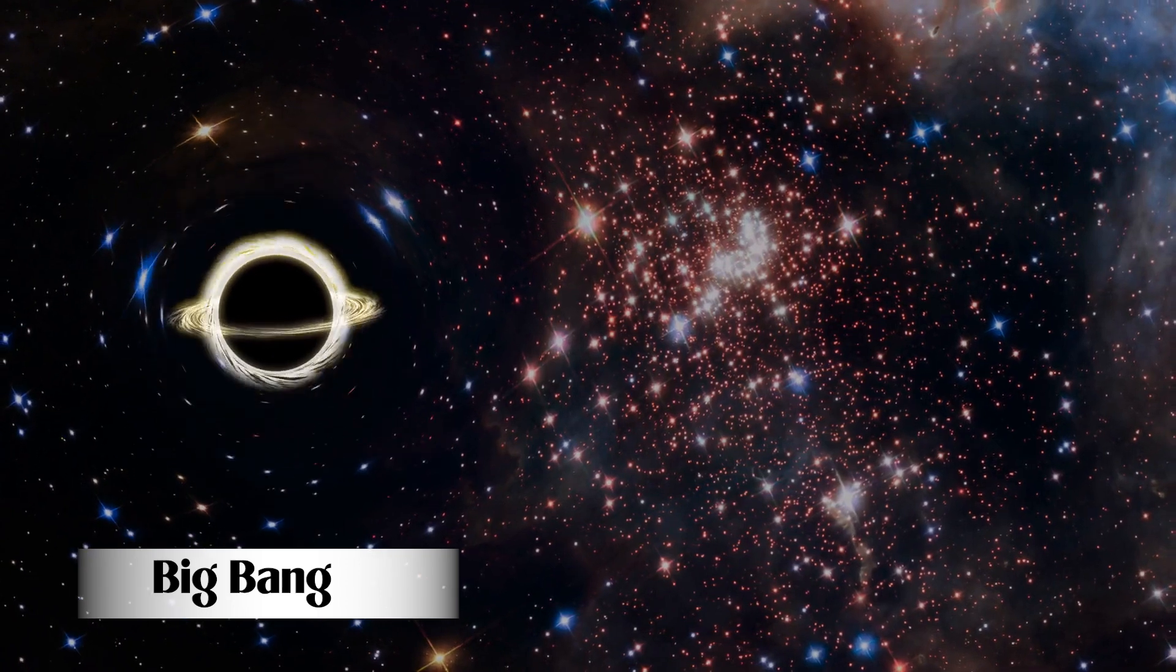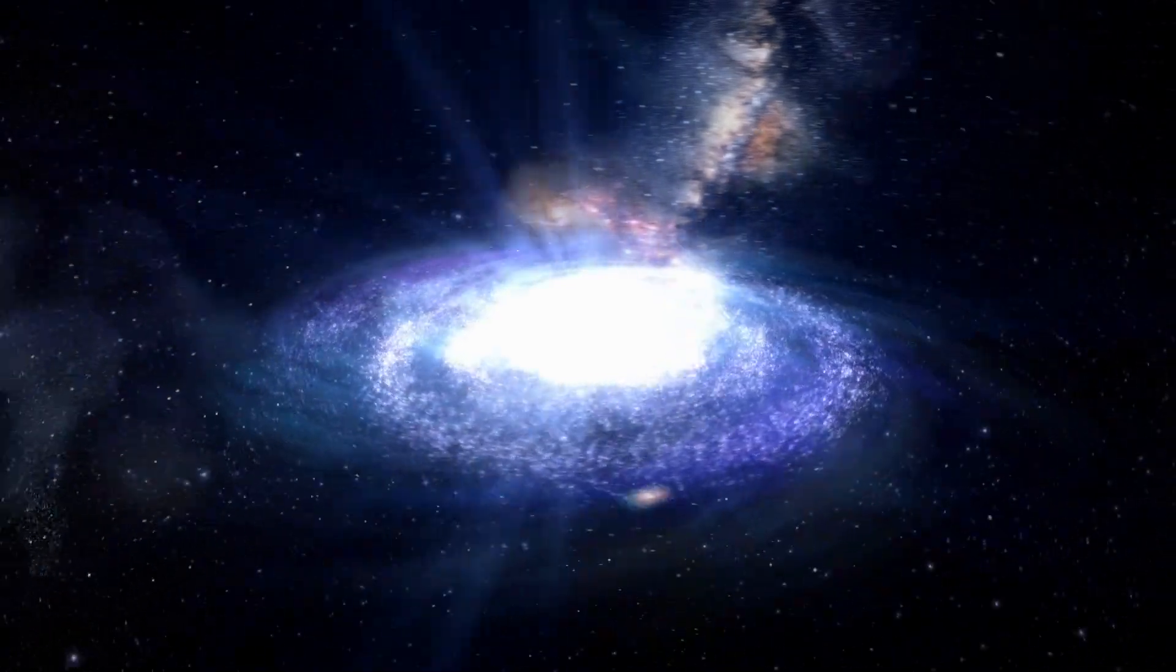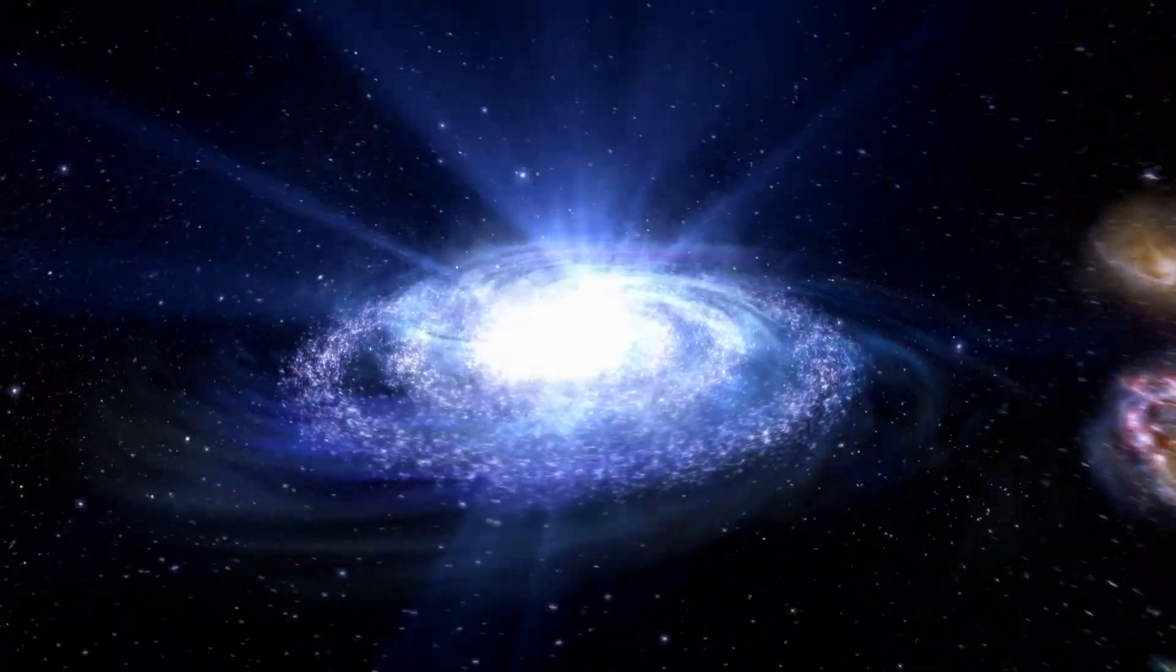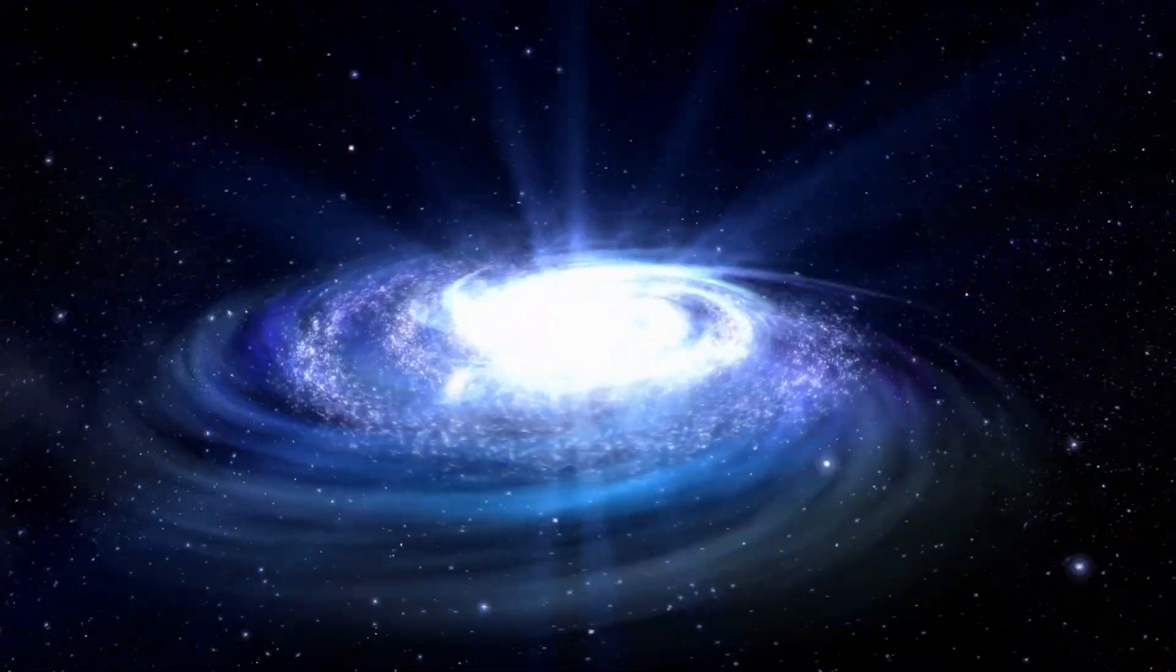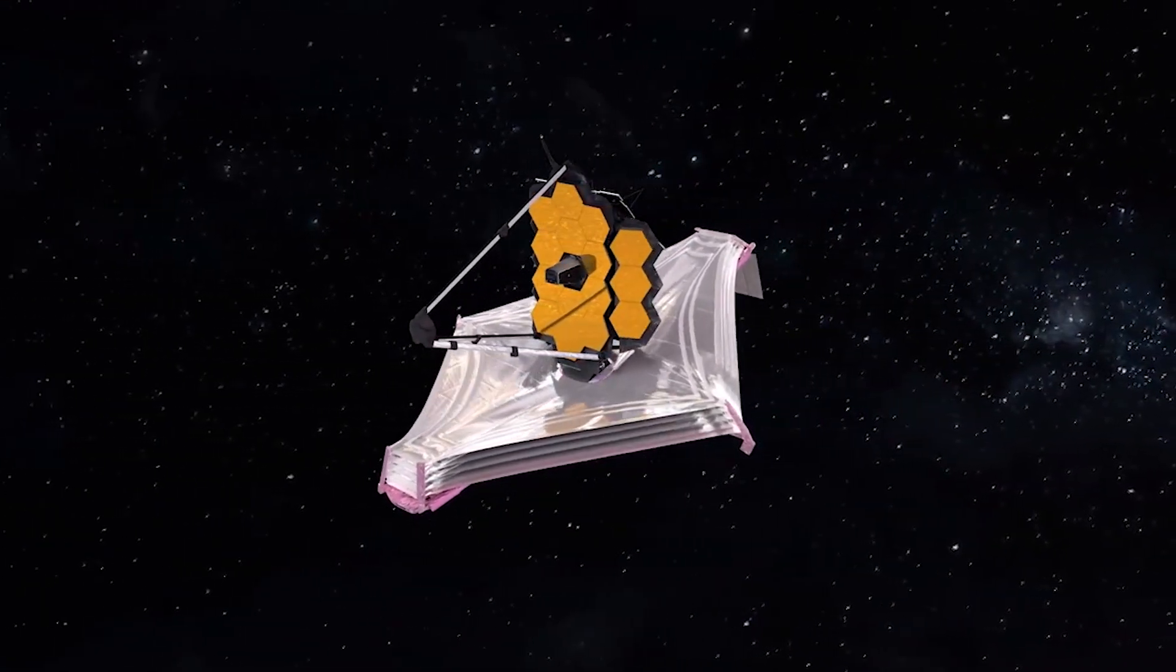This raises profound questions about where all the matter came from to fuel their rapid growth. According to previous models of cosmology, it typically takes billions of years for galaxies or black holes to evolve into the forms that James Webb is now revealing to us.